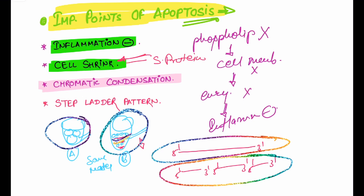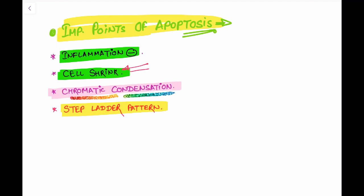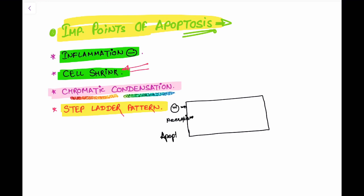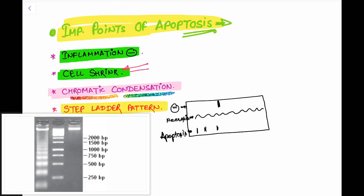When a cell's nucleic acid is divided into small fragments, it acquires less space. This is a hallmark feature of apoptosis: chromatin condensation. The last point is the step ladder pattern seen in gel electrophoresis. In normal cells there is a single dark band; in necrosis there is a smear pattern; but in apoptosis there is a step ladder pattern, which is also a hallmark feature.